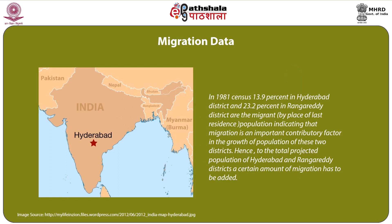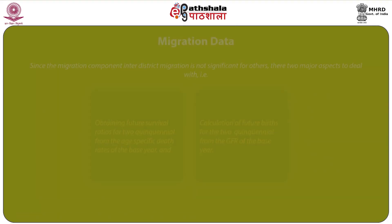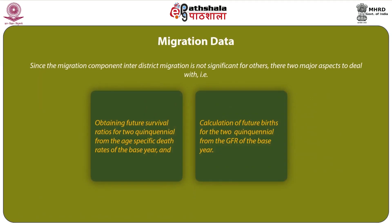In the 1981 census, 13.9% in Hyderabad district and 23.2% in Rangareddy district are migrants based on place of last residence, indicating that migration is an important contributory factor in the growth of population of these two districts. Hence, to the total projected population of Hyderabad and Rangareddy districts a certain amount of migration has to be added. Since inter-district migration is not significant for others, there are 2 major aspects to deal with: (1) obtaining future survival ratios for two quinquennia from the age-specific death rates of the base year, and (2) calculation of future births for the two quinquennia from the GFR of the base year.